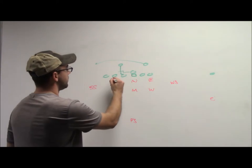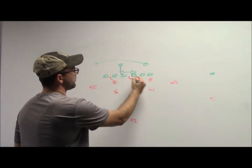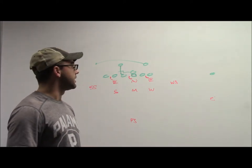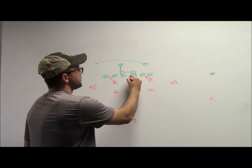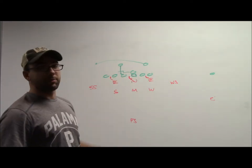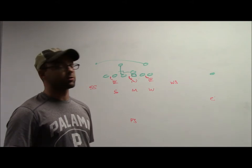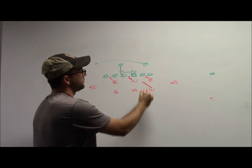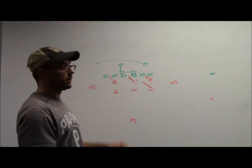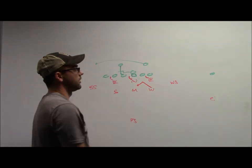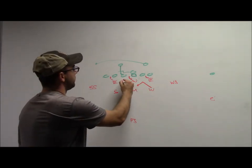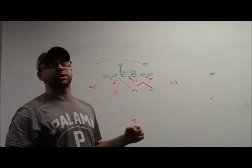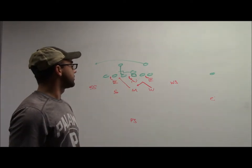N is responsible for C gap. Nose is responsible for strong side A gap. The backside N is responsible for the backside B gap. It's important that the nose defeats the reach block at the center and gets to his gap responsibility, and since he's in the A gap, he's responsible for the dive back. The backside linebacker, when he sees action going that way, is going to be responsible for the backside A gap. Once action clears there, he can begin to pursue the football. Mike linebacker is responsible for the dive back in the B gap, so he may have to rip underneath this block to make sure he's securing his gap.